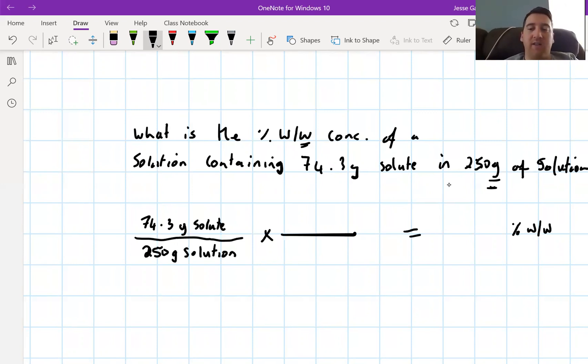We want to multiply by something to give us our answer in percentage weight per weight. Because this is a percentage, it's like any other percentage in maths. We're going to times it by 100 percent over 1. We've got grams over grams, which gives us our weight per weight. We don't need to cancel units. Put the amount of solute over the amount of solution in grams over grams, then times by 100 over 1. I'll do that calculation: 74.3 divided by 250 times by 100 gives me 29.72 percent. That would be your final answer, percent weight per weight.